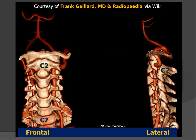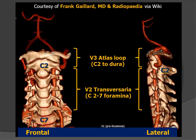These schematic diagrams were provided by Frank Gallard and Radiopaedia via Wikipedia. In the frontal and lateral projections, we can see the vertebral arteries coming off the subclavian, entering the transverse foramen of the cervical spine, and then looping around to enter the skull. The most common locations for dissections are the V3 atlas loop and the V2 foraminal or transversarial portions of the vertebral artery.